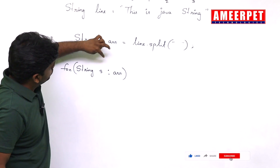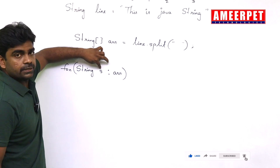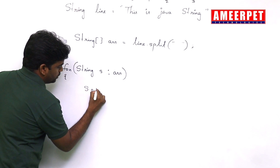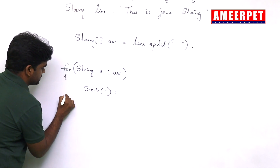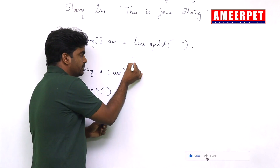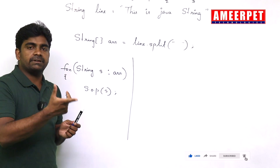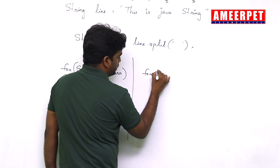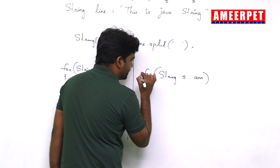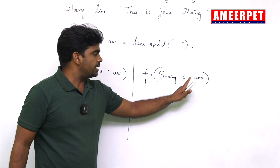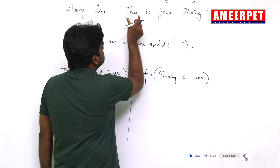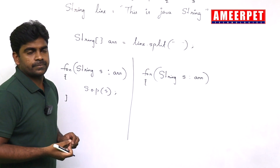Whenever we are collecting data from the array, each string is collected into a variable — suppose 's'. First the first string will come and store into s, next the second string will come and store into s, third string will come and store into s, and simply we are printing System.out.println(s) — printing word by word. But now the concept is: don't print the words, just reverse and print.